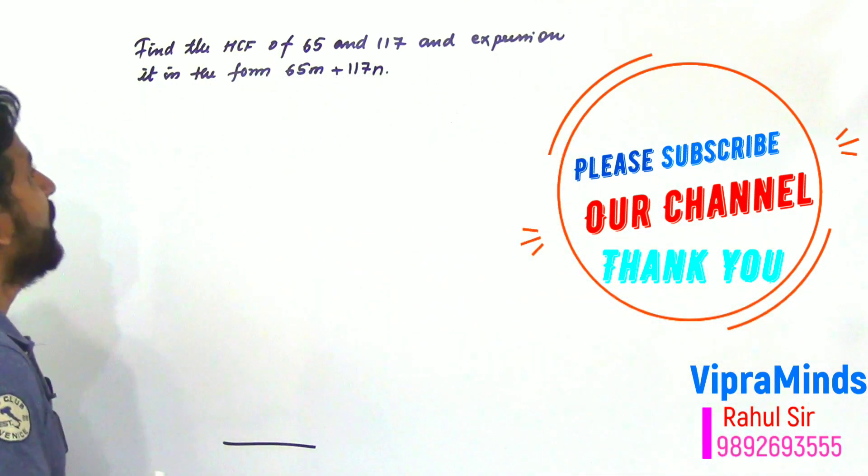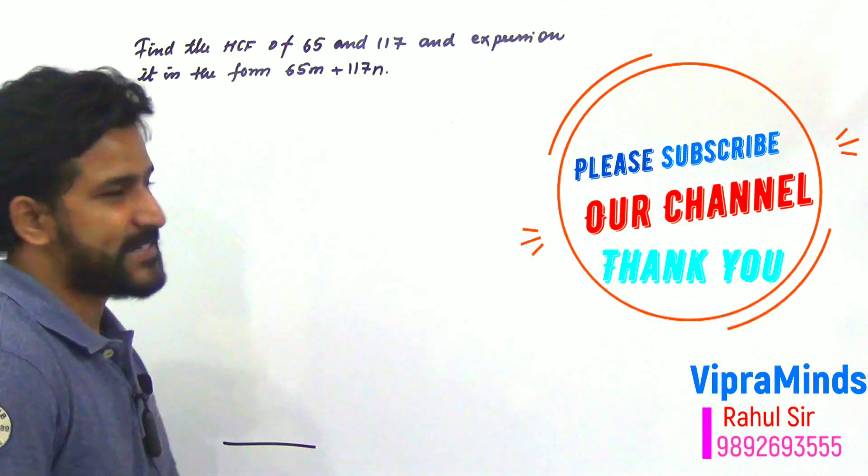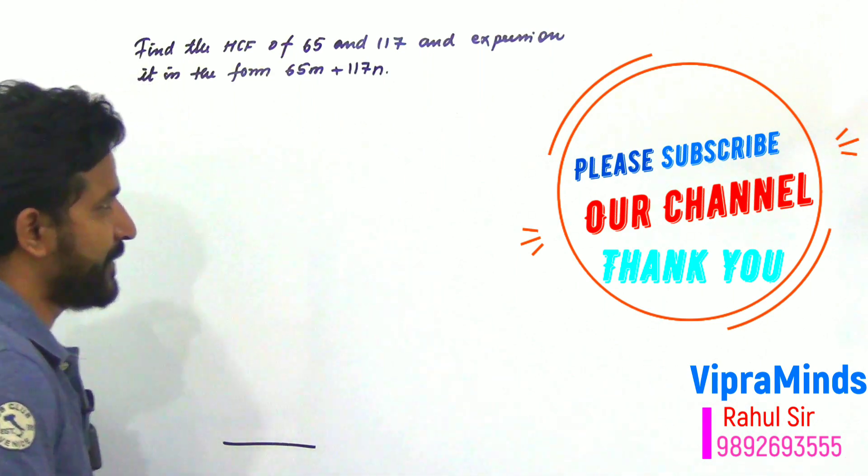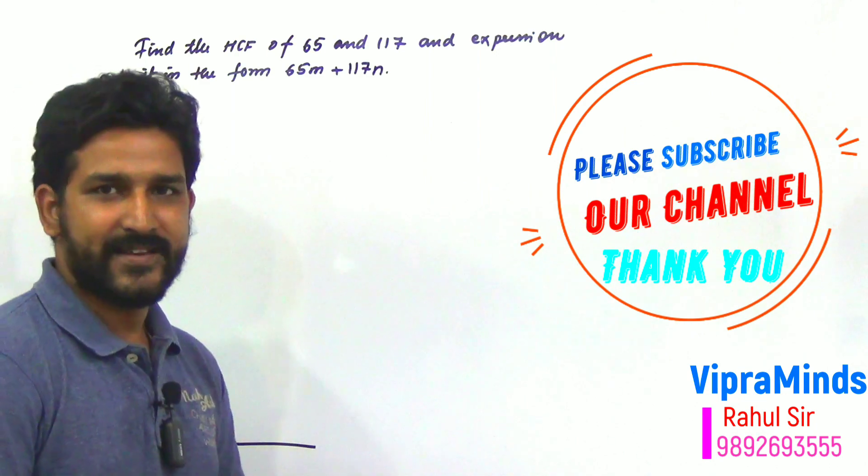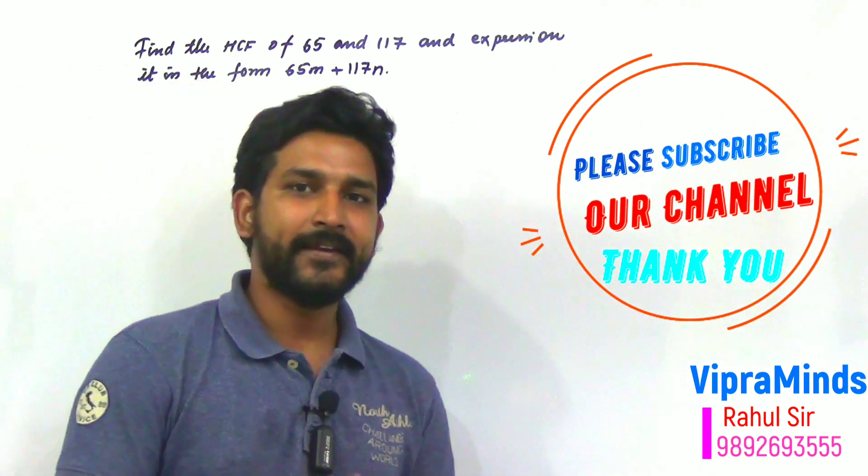So, what is the example here? Find the HCF of 65 and 117 and express it in the form of 65M plus 117N, that is a linear combination form.